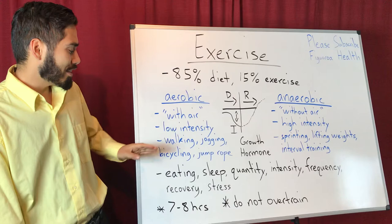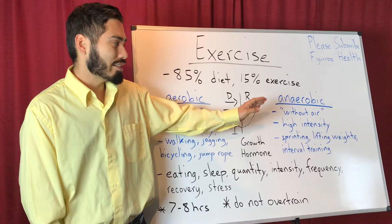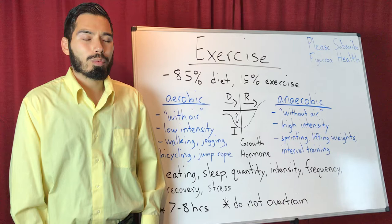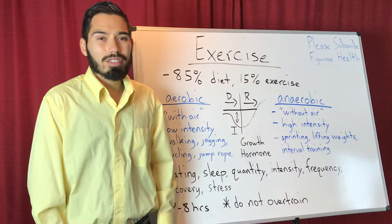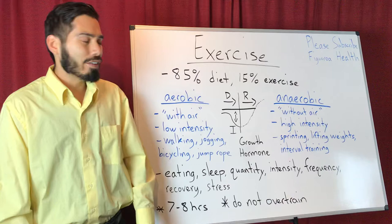The other type is anaerobic exercise, meaning it's without air. So essentially your body is producing energy without oxygen. It is also known as high intensity training. Some examples are sprinting, lifting weights, high interval training, other examples such as football or basketball, or even boxing or MMA.